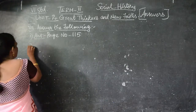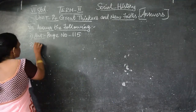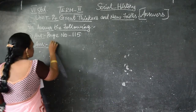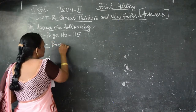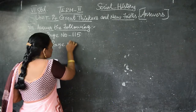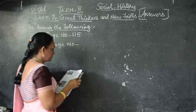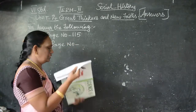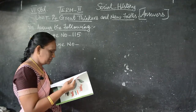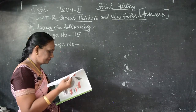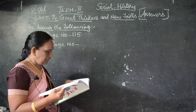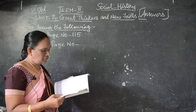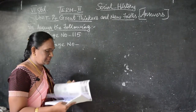Now the second question: What are the 5 important rules of conduct in Jainism?